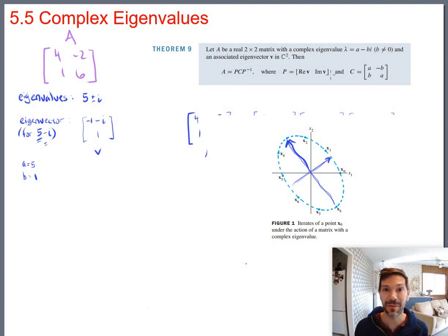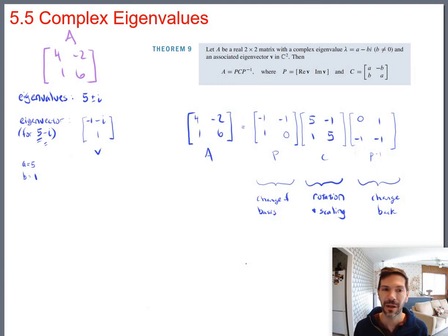And that's going to unlock our application in the next section, analyzing what happens with something that are called discrete dynamical systems, which we use to analyze a lot of real life behavior. It's one of these places where complex numbers allow us to predict real life behavior. So 5.5 is just locking down the skills, the computational skills for complex eigenvalues and this PCP inverse factoring. And 5.6 looks at the application of it. And that will finish the course for us.